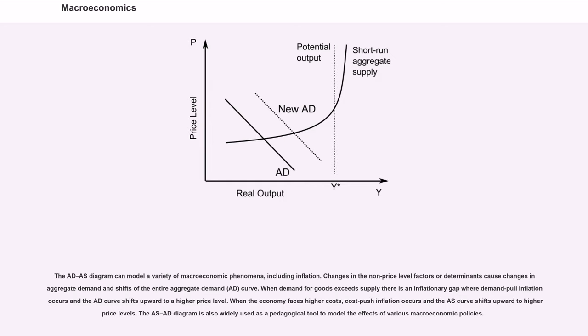The AD-AS diagram can model a variety of macroeconomic phenomena, including inflation. Changes in the non-price level factors or determinants cause changes in aggregate demand and shifts of the entire aggregate demand curve. When demand for goods exceeds supply, there is an inflationary gap where demand-pull inflation occurs and the AD curve shifts upward to a higher price level. When the economy faces higher costs, cost-push inflation occurs and the AS curve shifts upward to higher price levels.